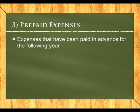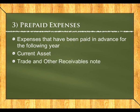Prepaid expenses are expenses paid in advance that relate to the following year. They are a current asset because if we closed the business now, whoever we've paid would have to refund us. They affect the trade and other receivables note. The journal entry is: debit prepaid expense (current asset) and credit the relevant expense account, for example credit telephone for the prepaid amount.